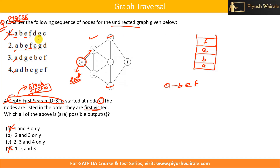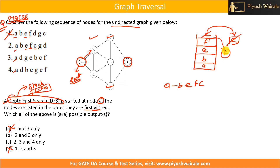Now at node F, I go to C. From C, I can go to B, F, or E — but B, E, and F are already in the stack, so there is no new node to explore. I pop C out. Back at F, I can go to C, E, or G — C is already visited, E is in the stack, so G is remaining. I add G to the stack.